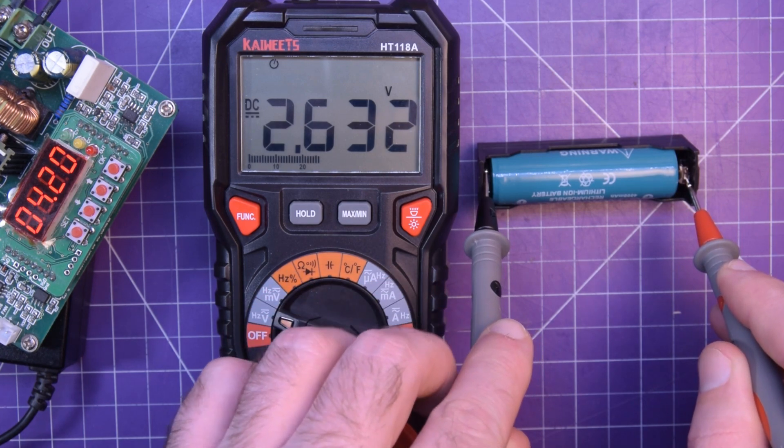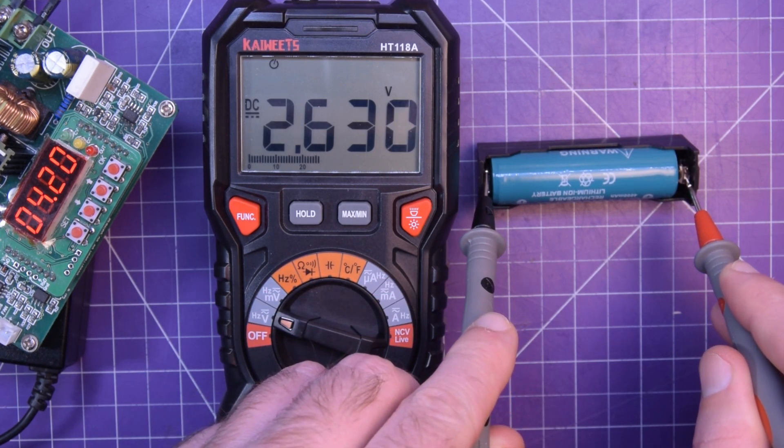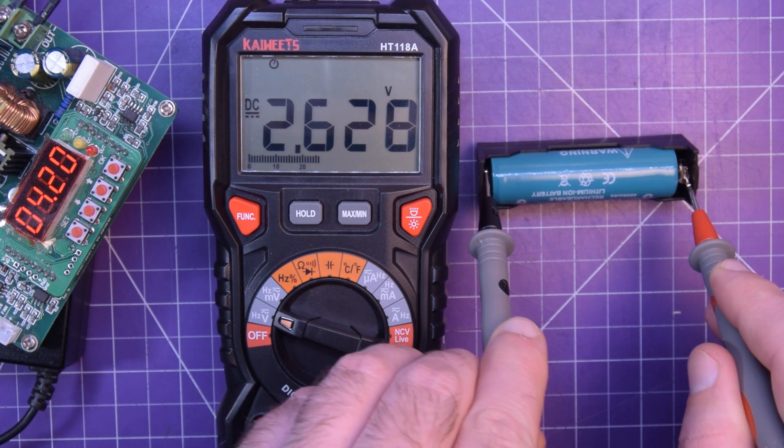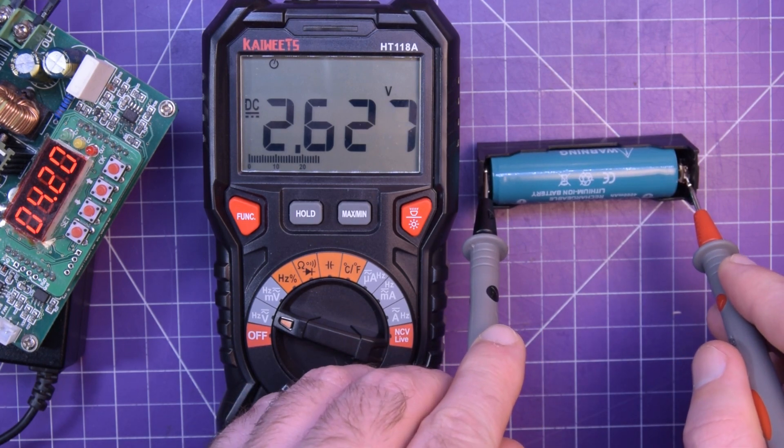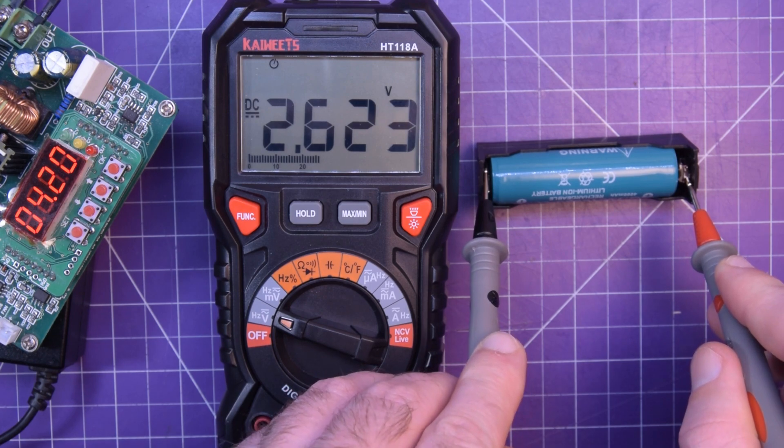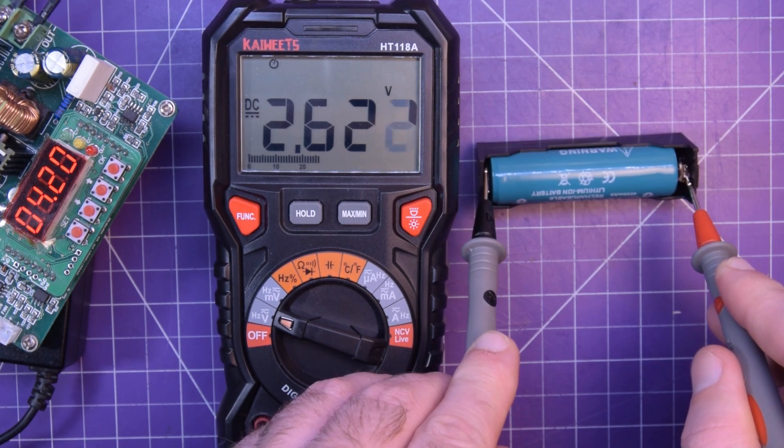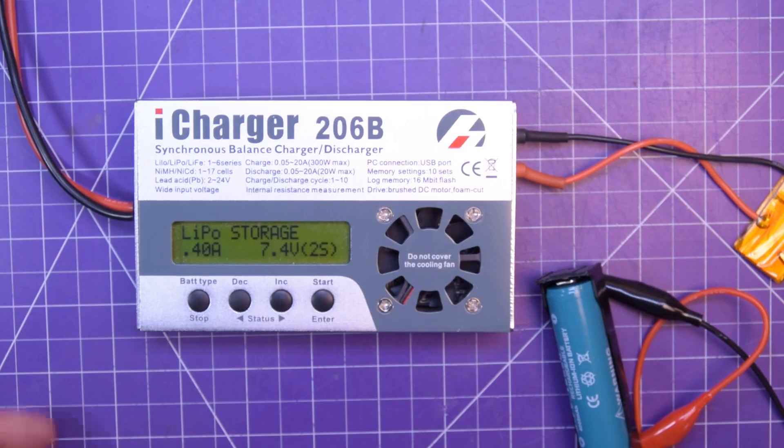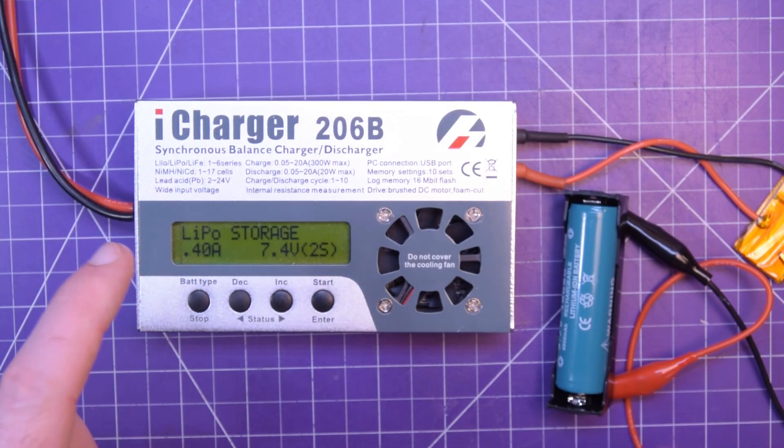So how am I going to do that? Well, I have a few options. I can use a TP board or I can just use my hobby charger. And I think I'm going to go with my hobby charger because it has statistics that we can look at.